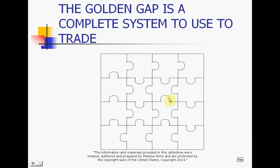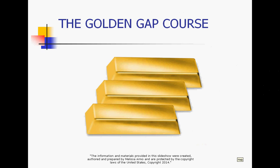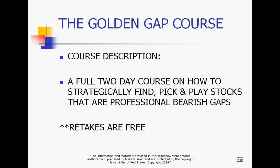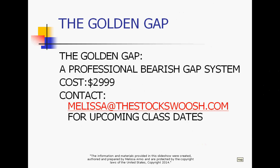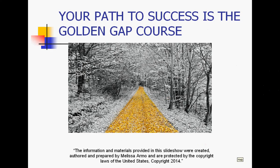The Golden Gap course is the main course that I teach. It is a complete system to use to trade in the market — a full two-day course on how to strategically find, pick, and play stocks that are professional bearish gaps. Retakes are free. The cost of the class is $29.99. If you're interested in more information, email me for upcoming class dates. The class is online, so you can be anywhere in the world and take it. You can retake it as many times as you need to. I encourage people to do well in their trading and I mentor them.